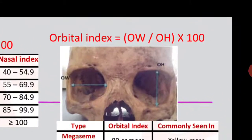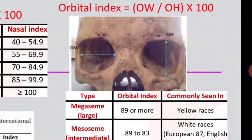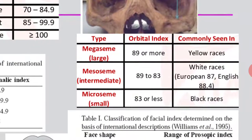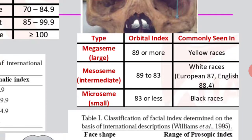Then on the other side I am showing the orbital index. The orbital index is taken from the orbit of the eyes — the place where the eye is located. The orbit width (OW) is divided by the orbit height (OH) and multiplied by 100. There are three types of orbital index values: megasemi (broader), mesosemi (moderate), and microsemi (smaller).